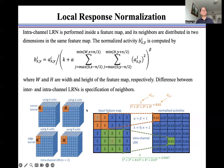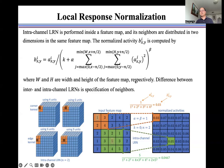Intra-channel local response normalization is performed inside the feature map, and its neighbors are distributed in two dimensions in the same feature map. The normalized activity B is computed using this formulation, where W and H are the width and height of the feature map respectively.